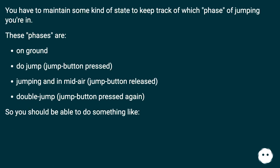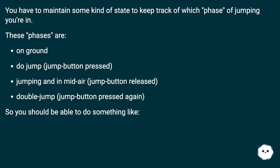You have to maintain some kind of state to keep track of which phase of jumping you're in. These phases are: on ground; do jump with jump button pressed; jumping and in mid-air with jump button released; double jump with jump button pressed again.